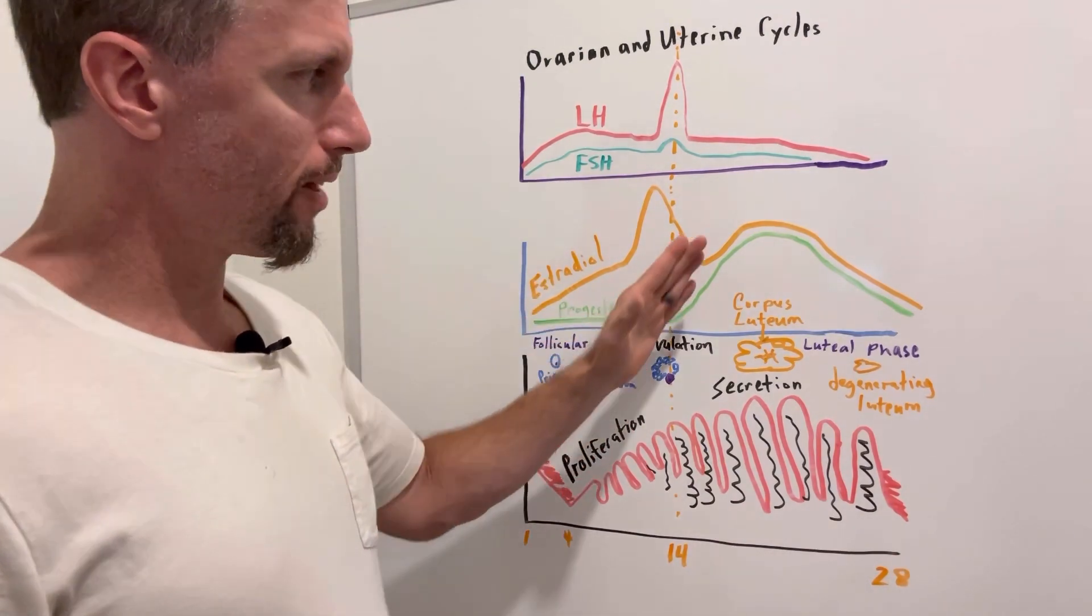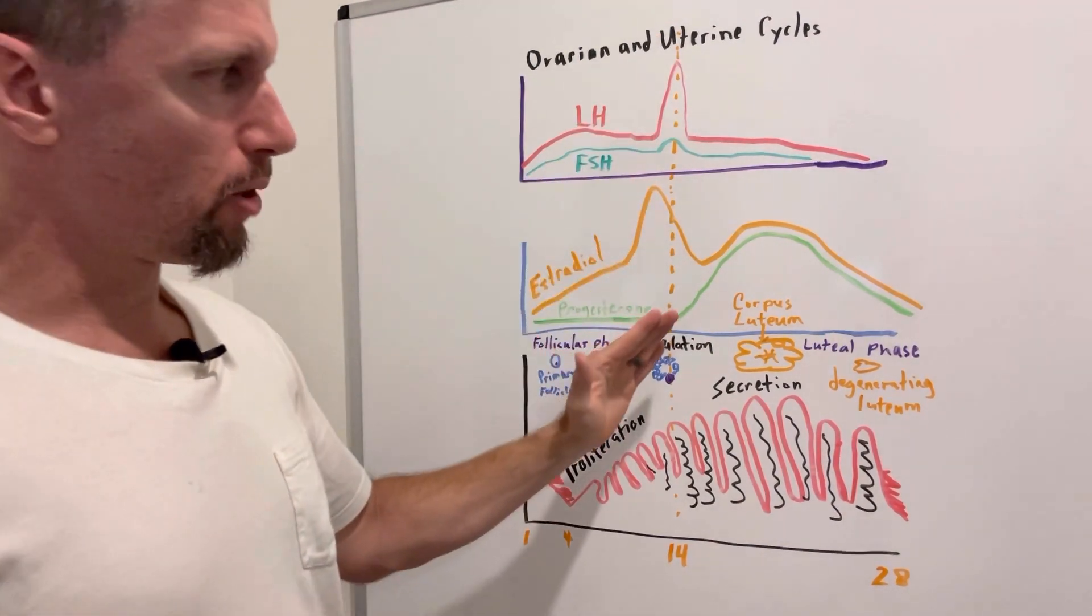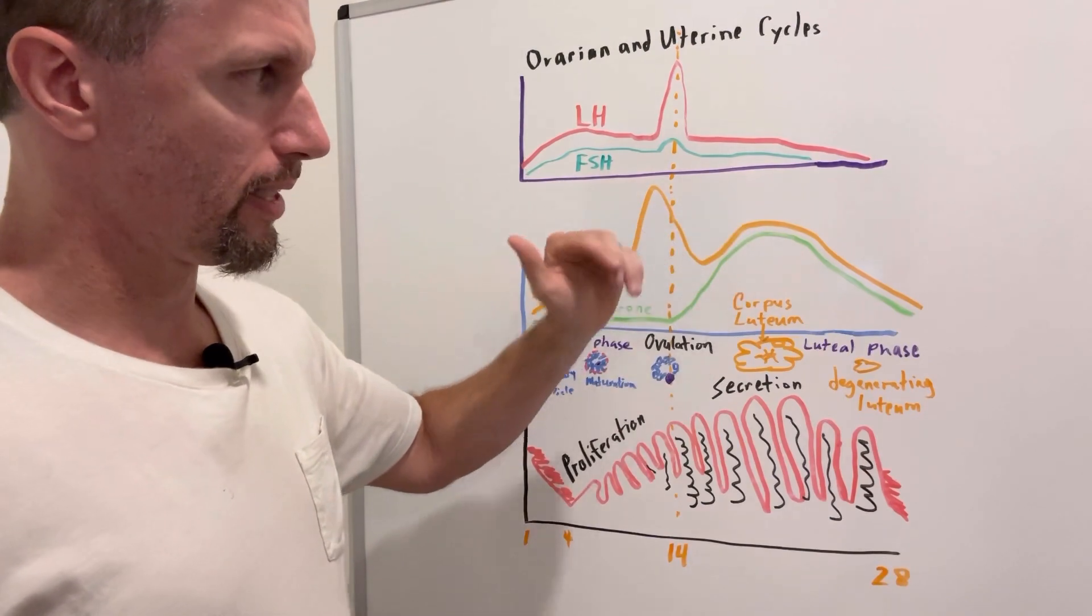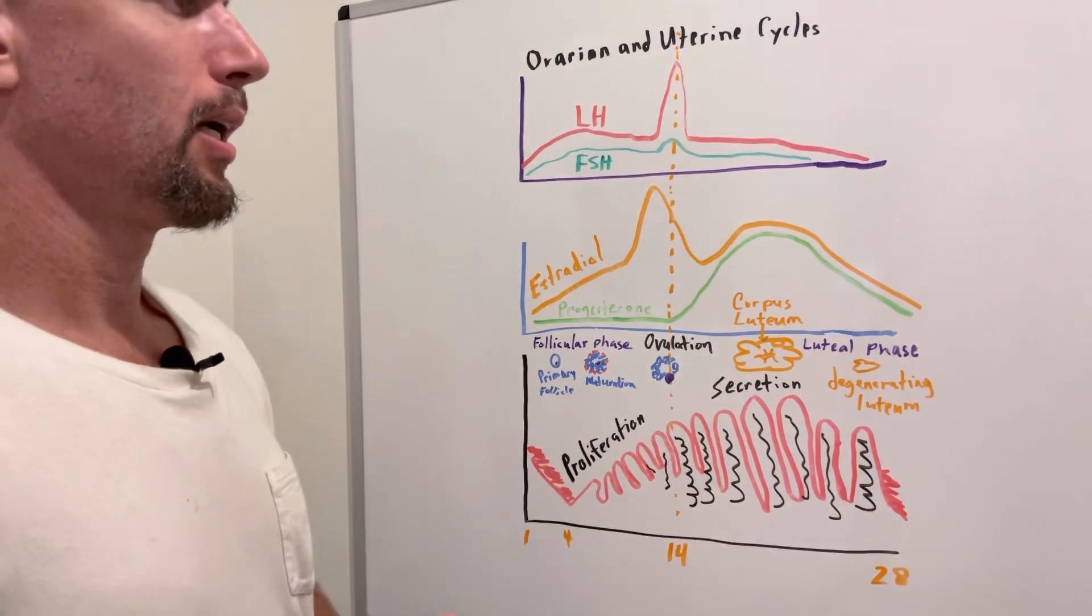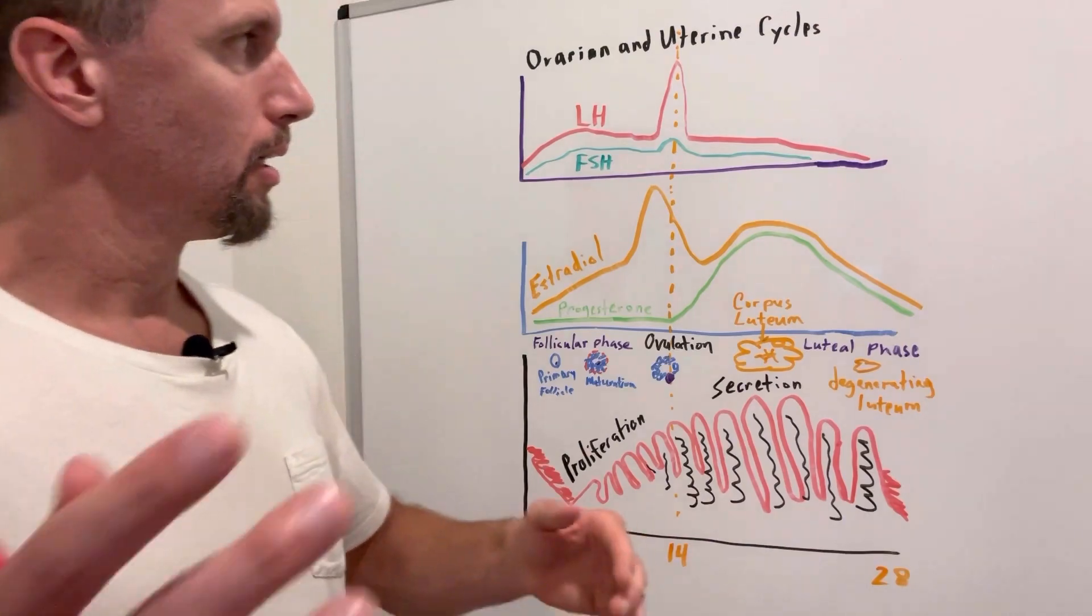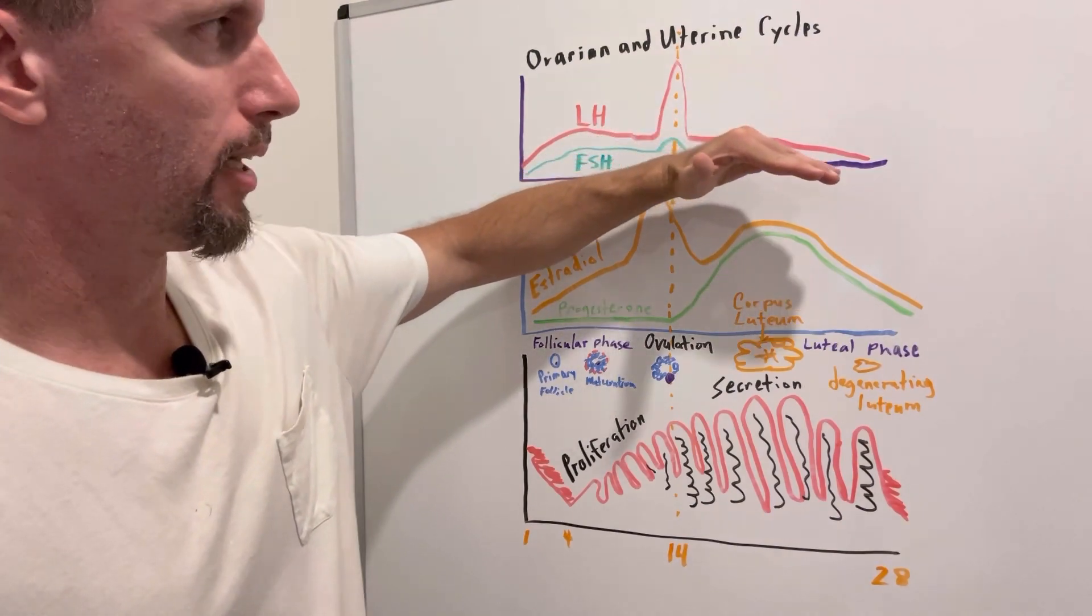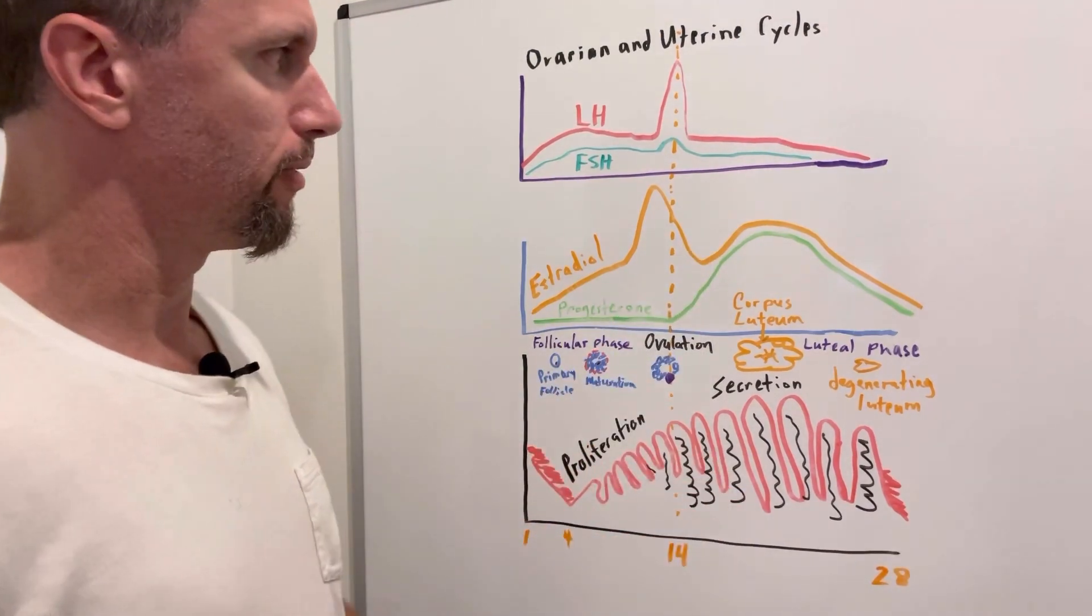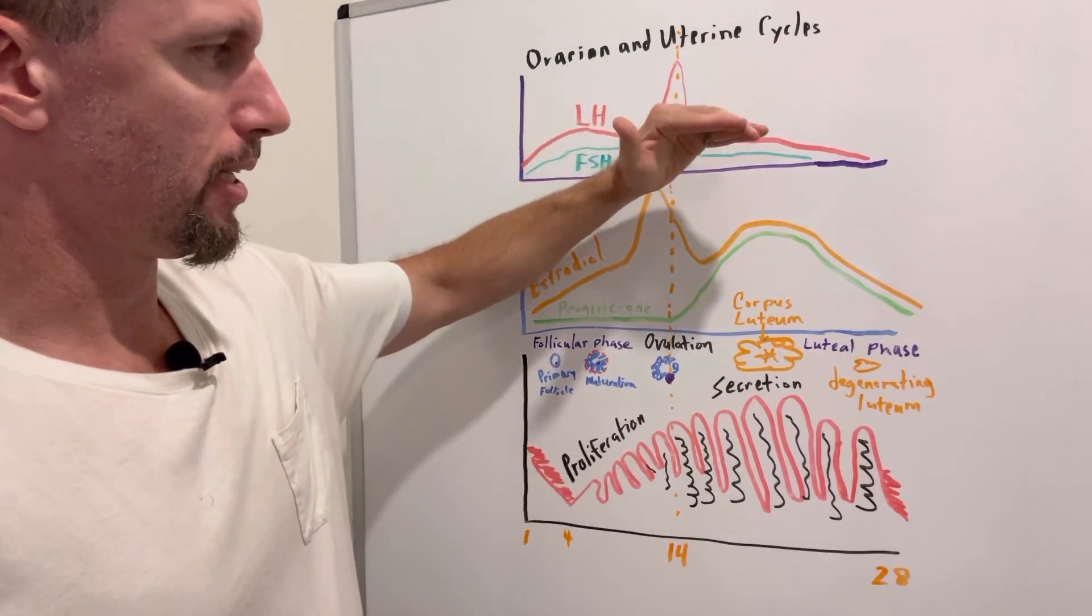And when these rise together, instead of causing positive feedback on LH and FSH, when they rise together, they actually cause a negative feedback. So it causes the release of an enzyme called inhibin that goes up, or a protein called inhibin and it inhibits gonadotropin-releasing hormone from the hypothalamus. If you don't get that going, then you're not going to get these going. So you're going to have a steady decline of LH and FSH because of the incline. So these are inversely proportional, negative feedback. So as progesterone and estradiol increase, LH and FSH decrease.